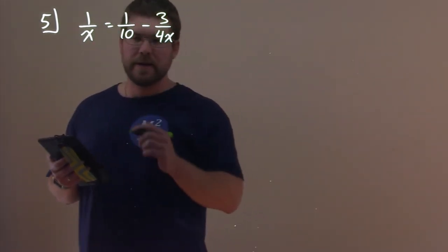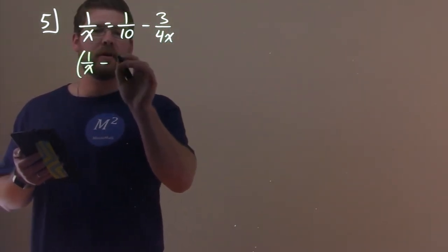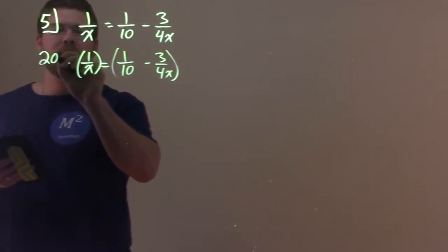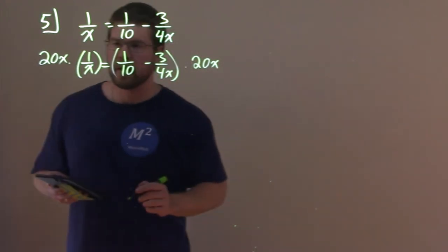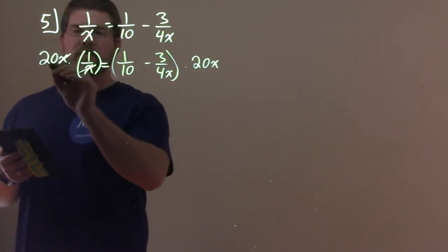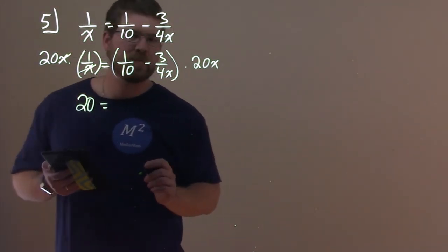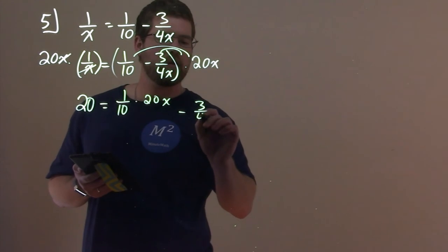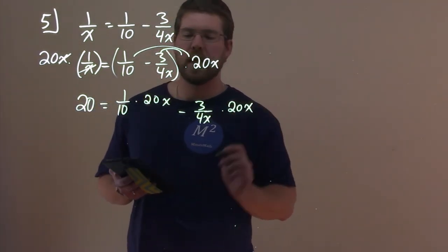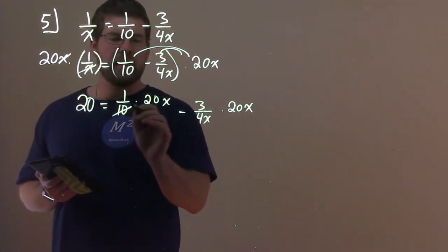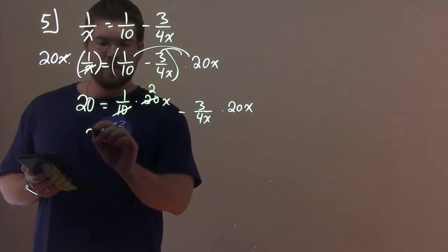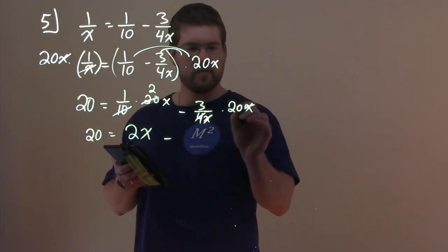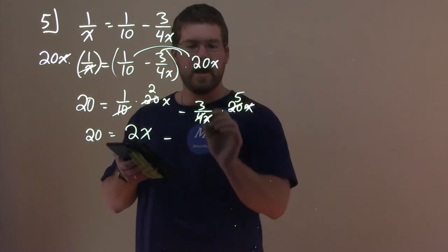So: 1 over x equals 1 over 10 minus 3 over 4x. Multiply both sides by 20x. Simplify: x's cancel, 20 times 1 is 20. On the right-hand side, distribute: 1 tenth times 20x minus 3 over 4x times 20x. 10 and 20 turns into a 2, so we have 2x. Then the x's cancel, and 4 goes into 20 five times, so 3 times 5 is 15.